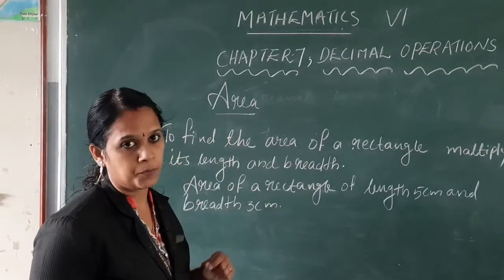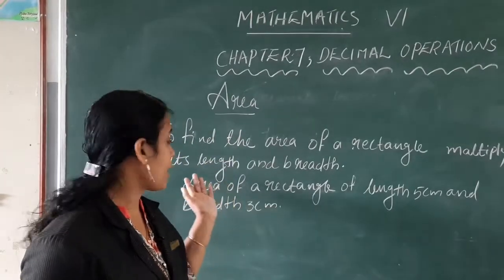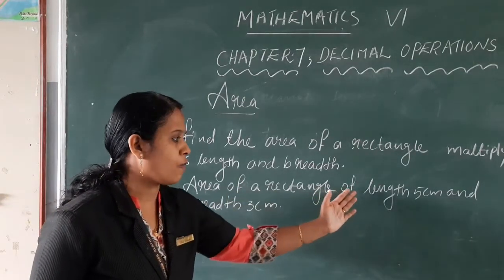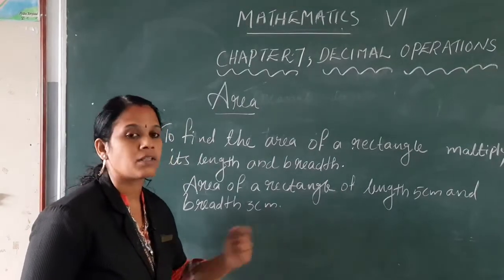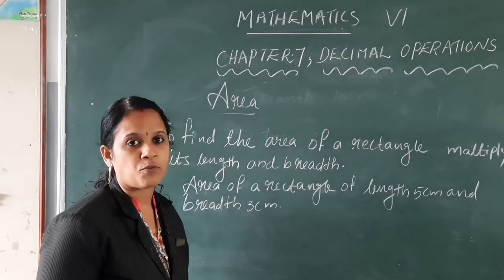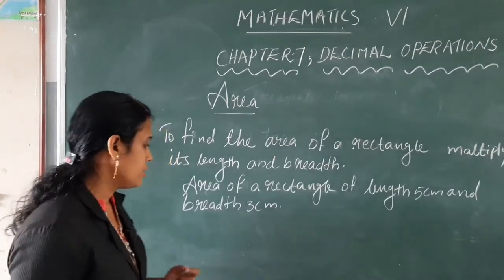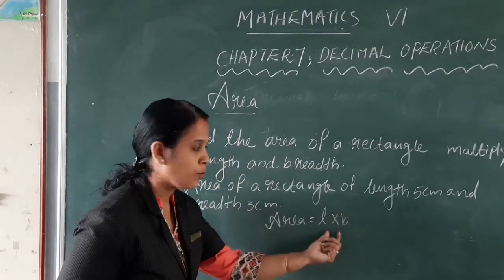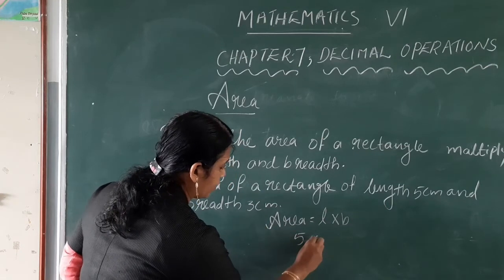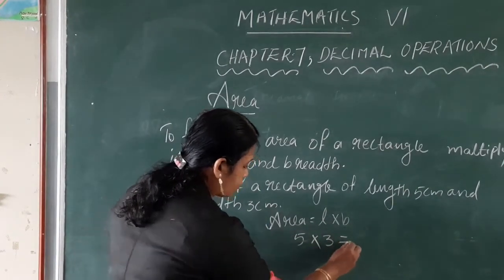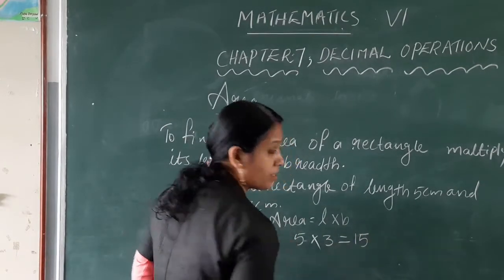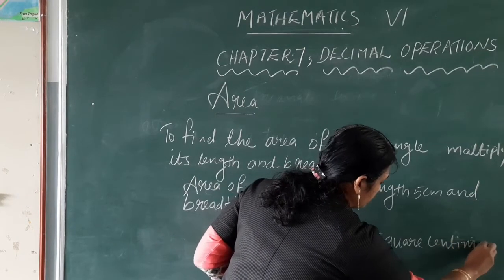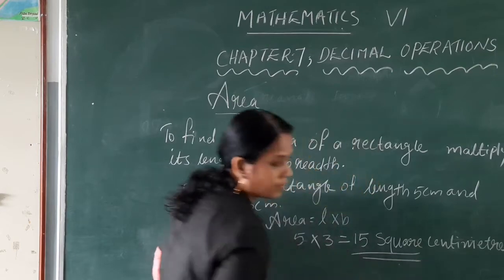Next topic is area. To find the area of a rectangle, multiply its length and breadth. The question is: find the area of a rectangle of length 5 centimetres and breadth 3 centimetres. So area is equal to length into breadth, L into B. Here, length 5 centimetres into breadth 3 centimetres equals 5 into 3 — 5 threes are 15 — so the area is 15 square centimetres.